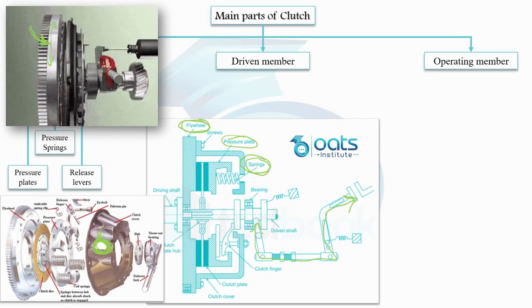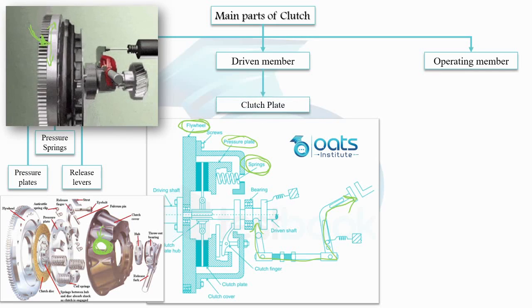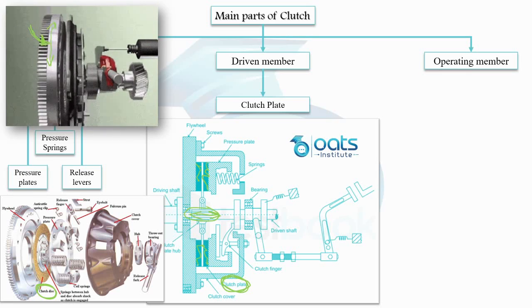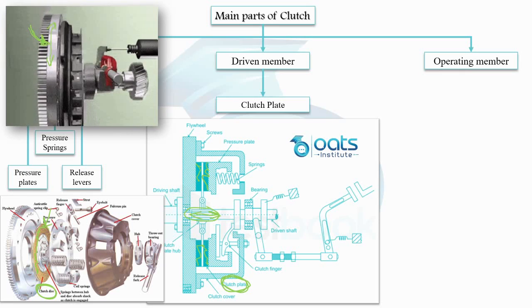Now, moving on to the driven member. We encounter a crucial piece known as the clutch plate or clutch disc. This disc is designed to freely slide on the splines of the clutch shaft, as we can see in this figure. The clutch plate is equipped with friction materials on both of its surfaces, enabling it to establish a firm grip. When the clutch plate is gripped between the flywheel and the pressure plate, it initiates the rotation of the clutch shaft through the engagement of the splines. This mechanism facilitates the transfer of power from the engine to the transmission system.